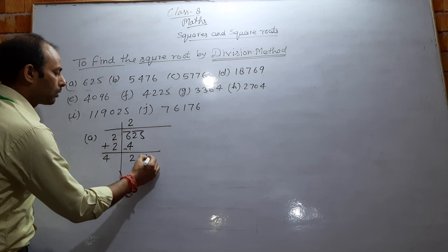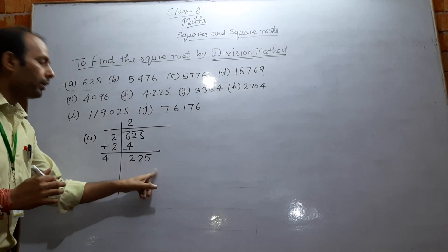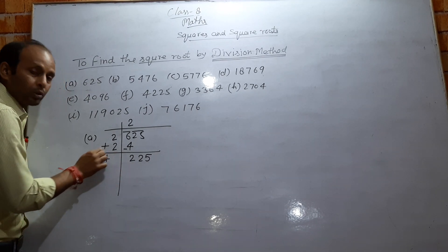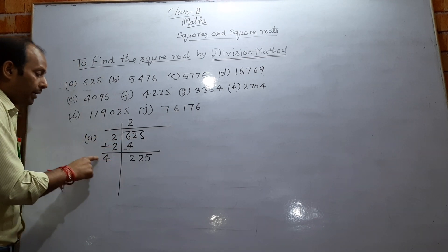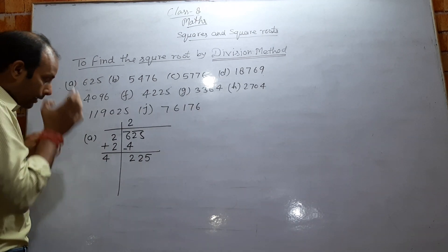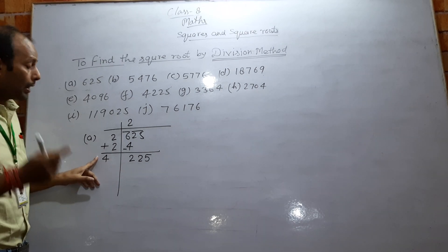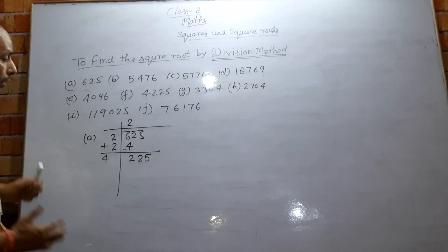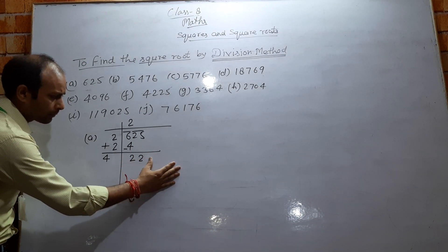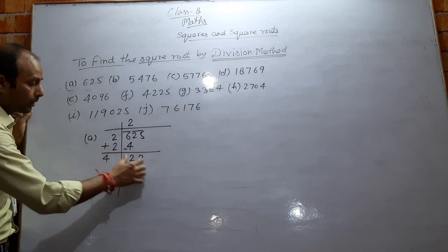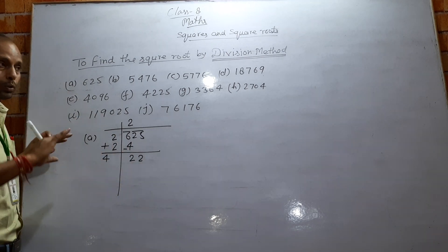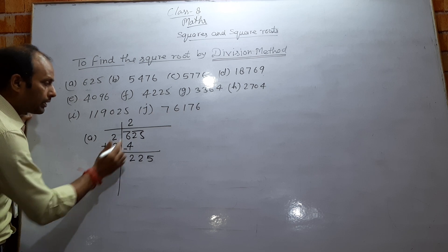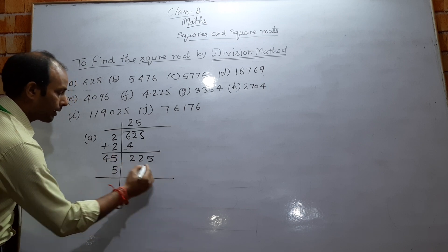The next pair is 25. We bring down 25 to get 225. Now we take any digit, form a two-digit number, and multiply that digit by the two-digit number. The unit digit of the result determines our choice. When we divide, the maximum digit that fits is 5. So the digit here is 5, and we multiply 5 by 45.